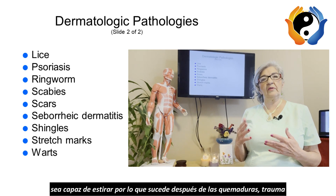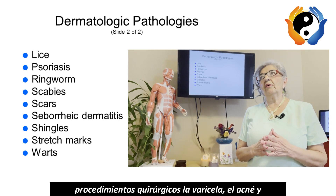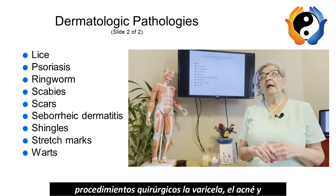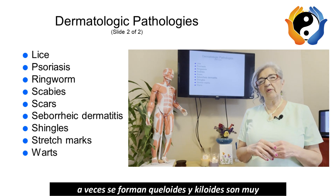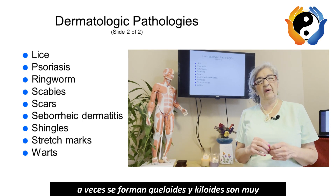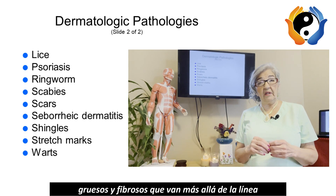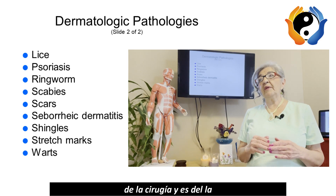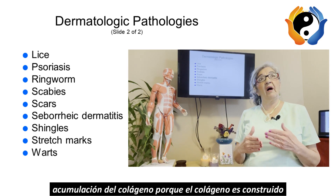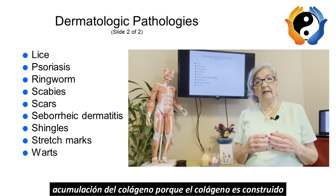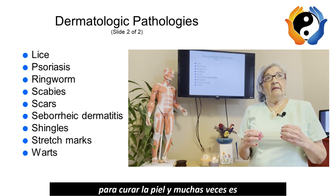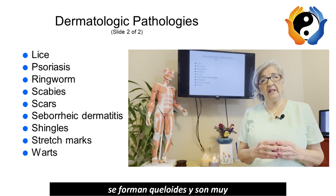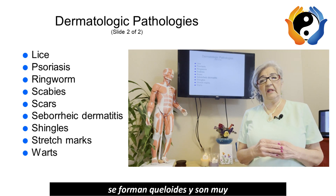Scars happen after trauma, burns, surgical procedures, chicken pox, and acne. Sometimes keloids are formed — keloids are very thick and ropey, they go beyond the line of the surgery. They result from the buildup of collagen, often an overproduction, which is why keloids form and are very ropey.